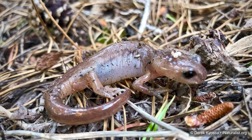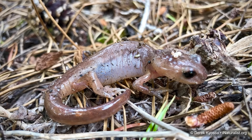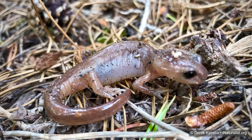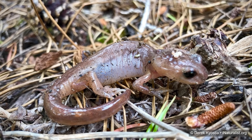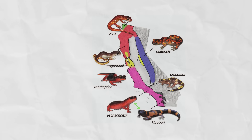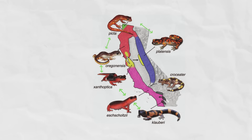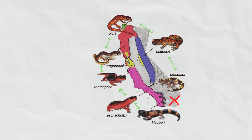Now here's the thing: each population is capable of breeding and producing viable offspring that themselves can reproduce with the neighboring population. So it is possible for genes from one end of the horseshoe to make their way all the way to the other end. But individuals from one end can't reproduce with individuals from the other end. So are they one species or many species? If many, how many and why?